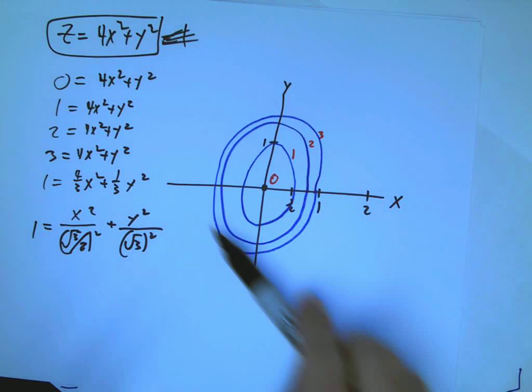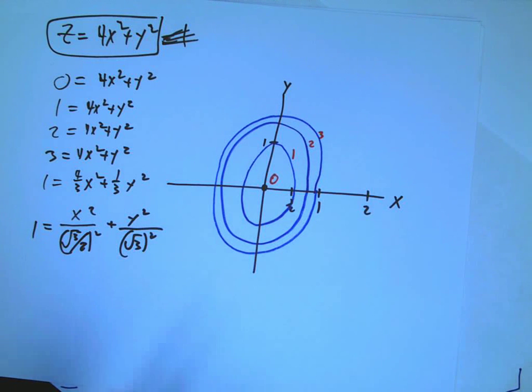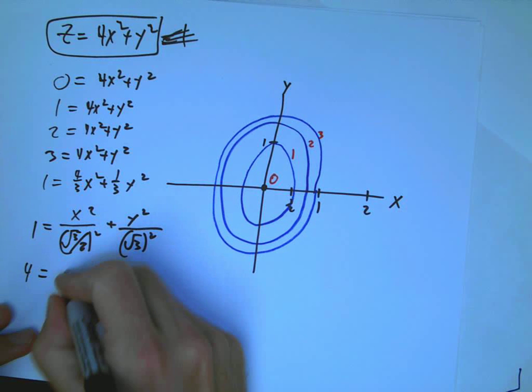In principle they don't have to be, but then you lose that connection between, just visually, between how close they are together and how steep the curve is.